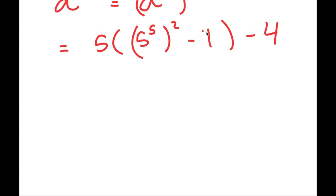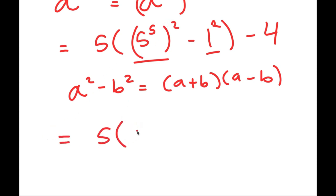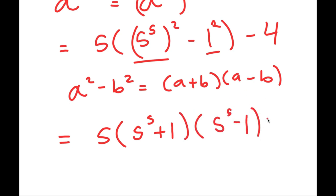Now I'm going to rewrite 1 here as 1 squared, and the reason I'm doing this is so I can use the property a squared minus b squared equals a plus b times a minus b. So notice we have a squared — in this case a is 5 to the power of 5 — minus b squared, where b is 1. So it turns into 5 times 5 to the power of 5 plus 1, times 5 to the power of 5 minus 1, and then we have minus 4 at the end.